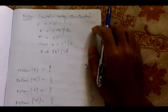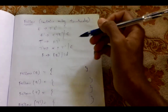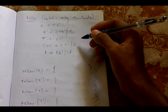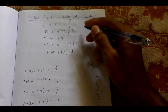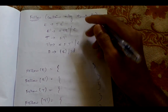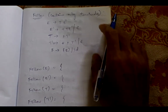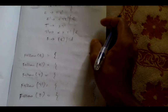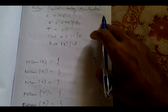Bismillah. Assalaat wassalamu ala rasulillah. Assalamu alaikum everyone. Now we will be looking at how to find the follow set for a given grammar. This is the grammar which we have been given, and we need to find the follow set of items for this grammar.